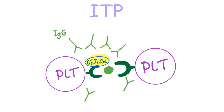Immune thrombocytopenic purpura. Basically there are IgG antibodies attacking the GP2B3A receptor which is on the platelet. This will prevent platelet aggregation. If there is no platelet aggregation, primary hemostasis is toast.